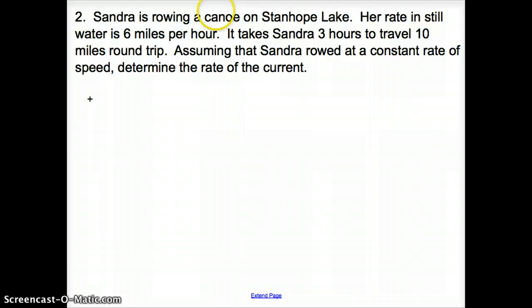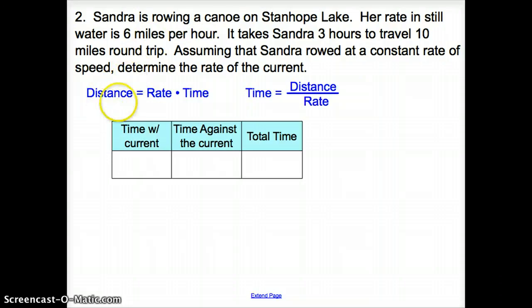Next we have Sandra is rowing a canoe on Stanhope Lake. Her rate in still water is 6 miles per hour. It takes Sandra 3 hours to travel 10 miles round trip. Assuming that Sandra rowed at a constant rate of speed, determine the rate of the current. Whenever we are talking about rate, distance, or time, we're probably going to use distance equals rate times time and time equals distance divided by rate.